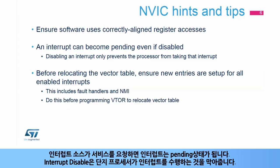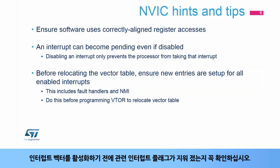An interrupt becomes pending when the source asks for service. Disabling of the interrupt only prevents the processor from taking that interrupt. Make sure the related interrupt flag is cleared before enabling the interrupt vector.